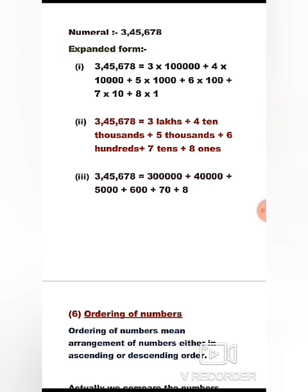In the second way, we write the expanded form by writing the digit and beside it the place name in words. So 3,45,678 is equal to 3 lakhs + 4 ten-thousands + 5 thousands + 6 hundreds + 7 tens + 8 ones.